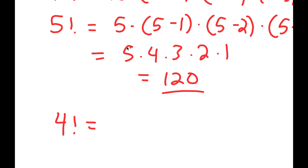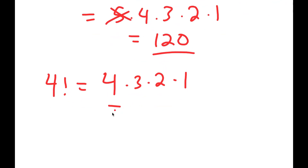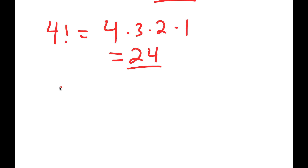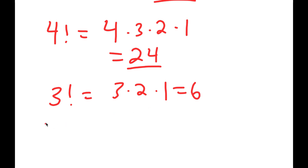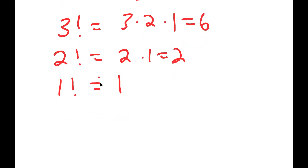So 5 factorial is equal to 120. Now let's go one lower — 4 factorial is just one less than 5, so we cancel out the 5 and it's 4 times 3 times 2 times 1. 4 times 3 is 12 and 12 times 2 is 24. Then 3 factorial is 3 times 2 times 1 which is 6, and 2 factorial is 2 times 1 which is 2.